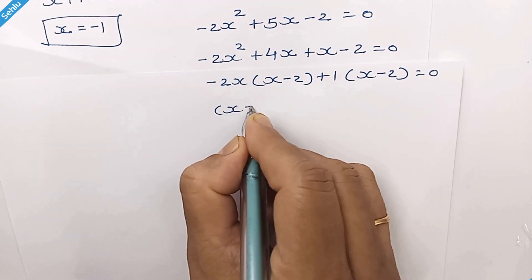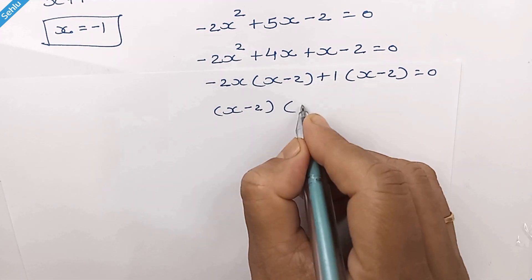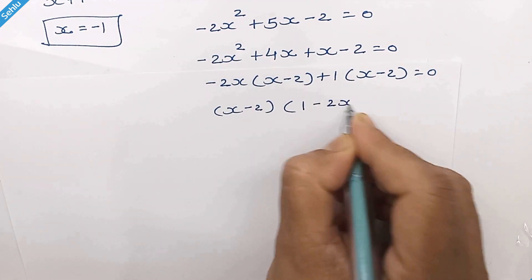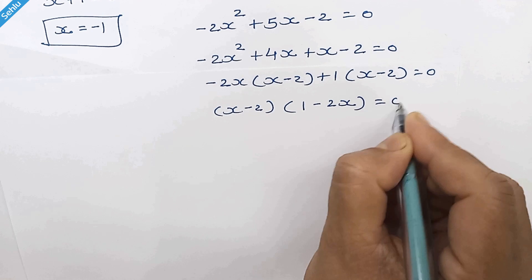So we have x minus 2 times 1 minus 2x is equal to 0.